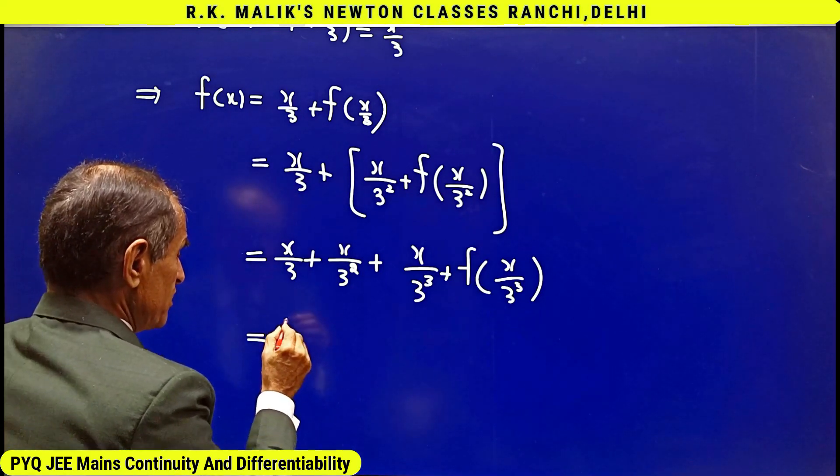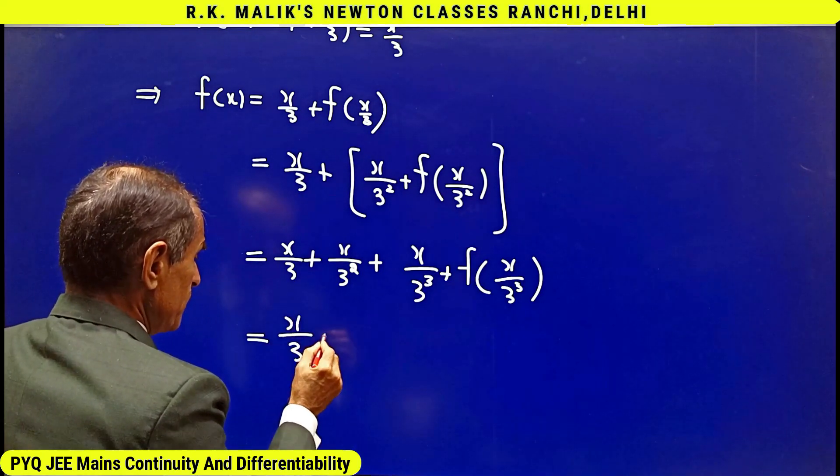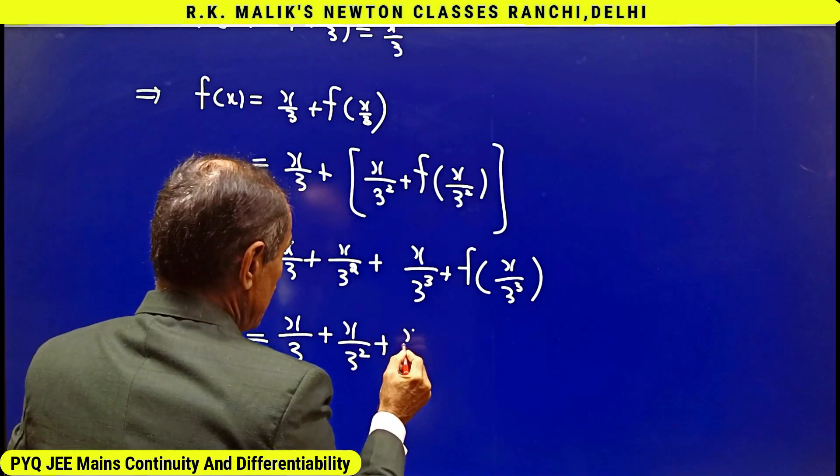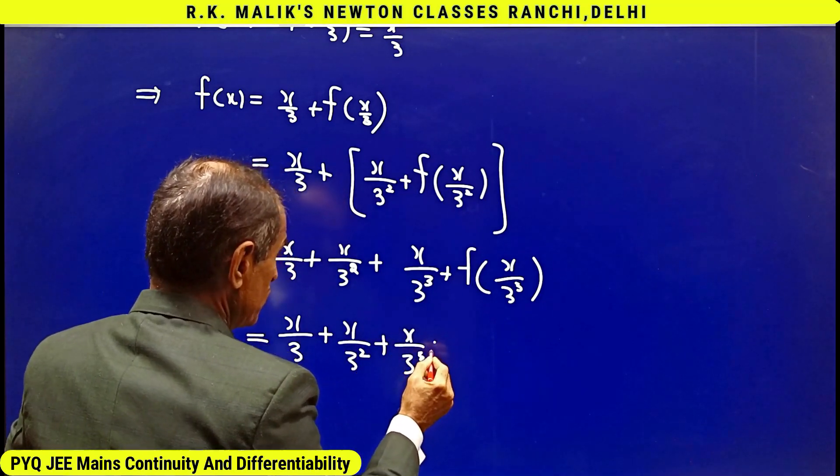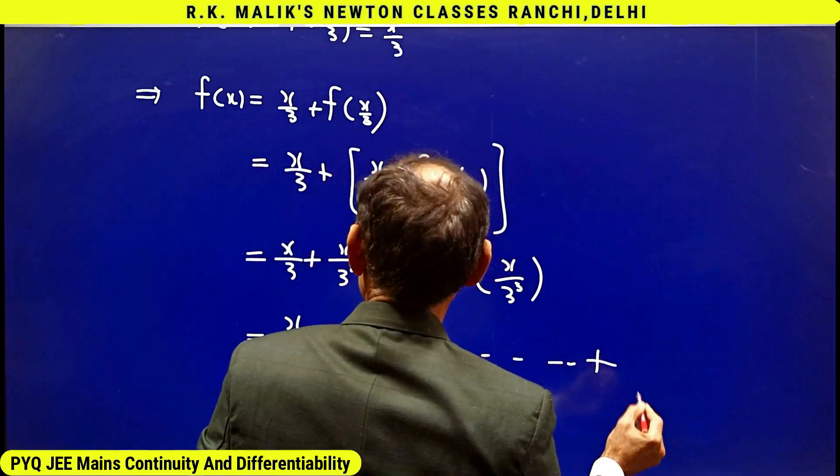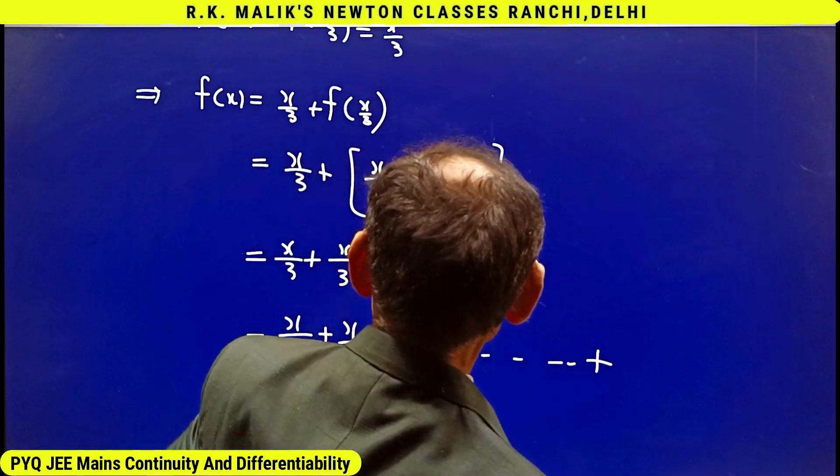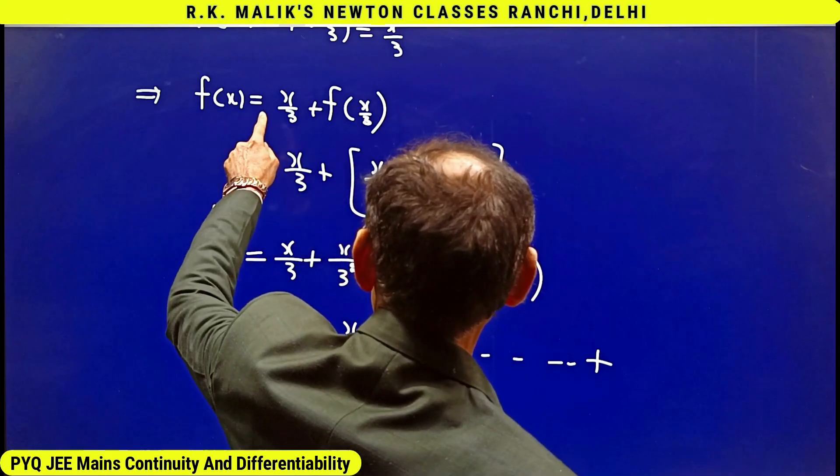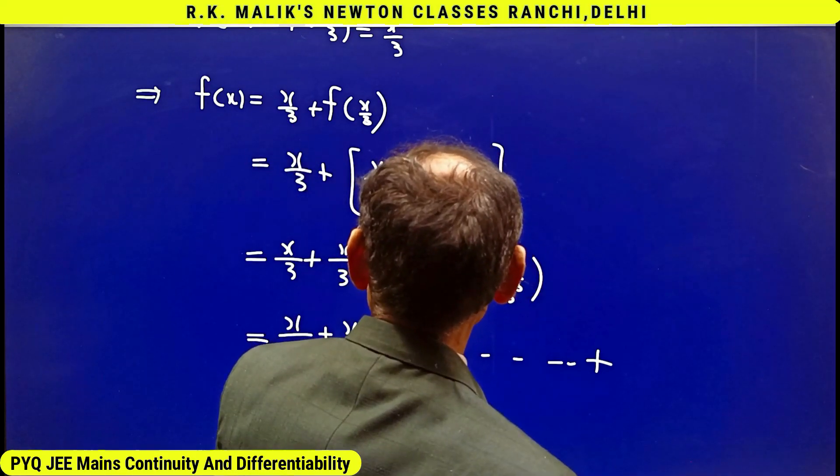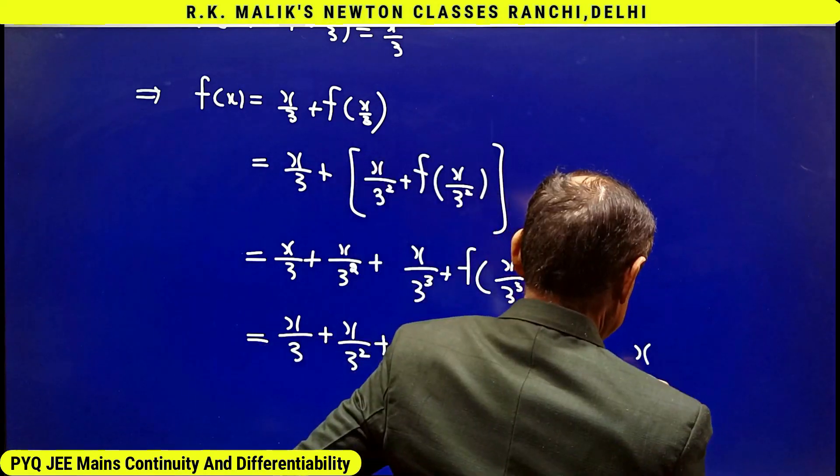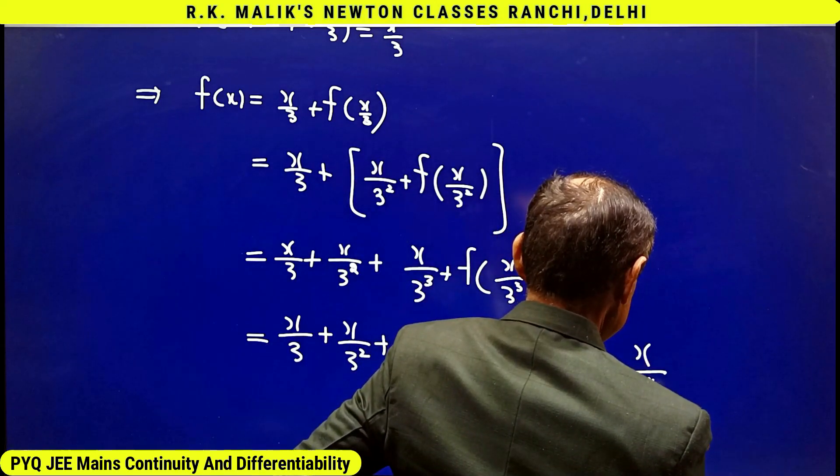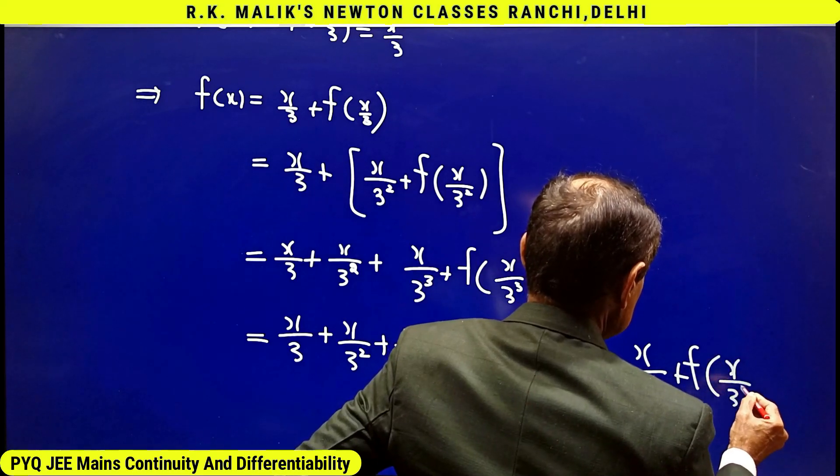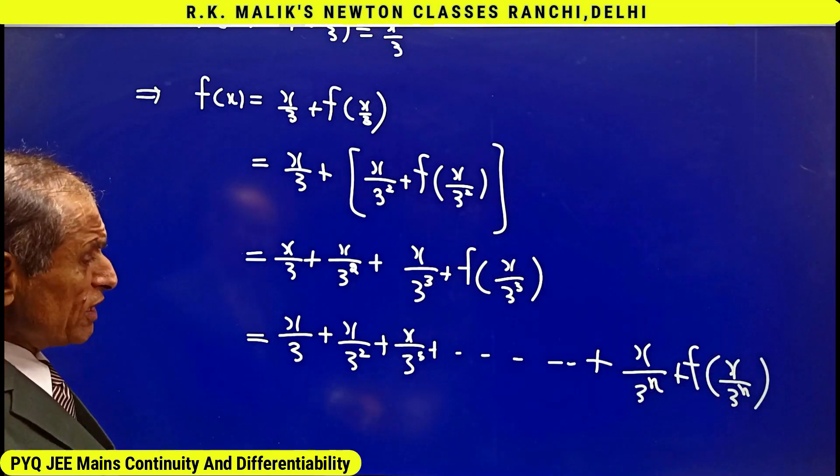For f(x) I will be reaching at x/3 + x/9 + x/27... If I take this step as first step after using first step I have reached at x/27, I will be reaching at x/3^n + f(x/3^n) and now I take